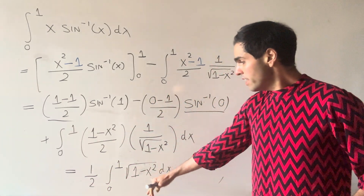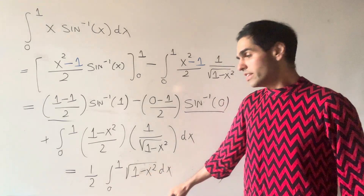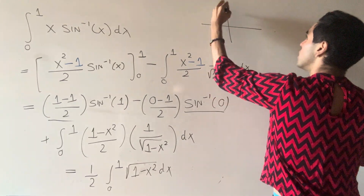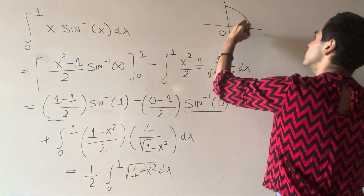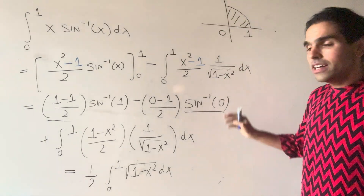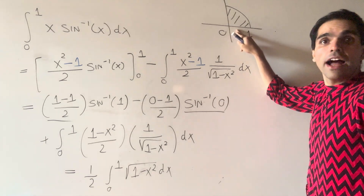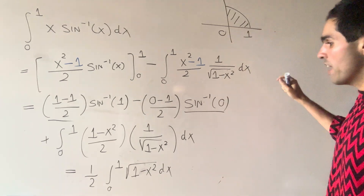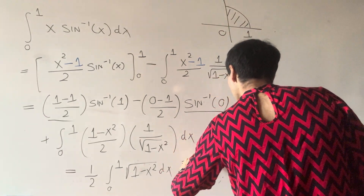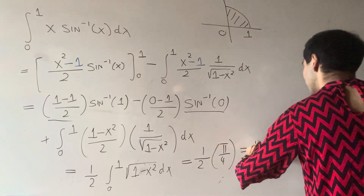The cool thing is this integral — we don't even need to find an antiderivative, because it's just the area of a quarter circle, right here, from zero to one. This area is one quarter times pi times one squared, so pi over four. So in the end, this integral equals one half times pi over four, and that is pi over eight.